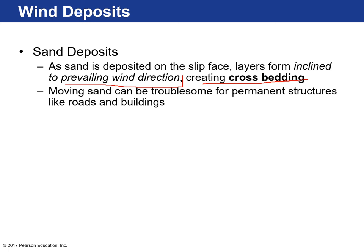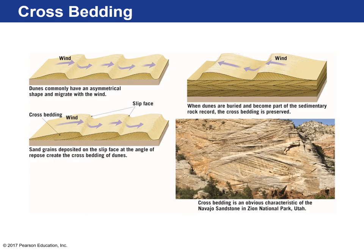We've seen cross bedding in other national parks — the cross-bedded Navajo Sandstone at Zion National Park is an example. Here you can see how cross beds form: prevailing winds move in one direction, then a shift in the winds causes the dunes to change direction, creating cross-bedded structures. This moving sand can be troublesome for permanent structures like roads and buildings, since a change in wind can blow sand into an area and cover things up.